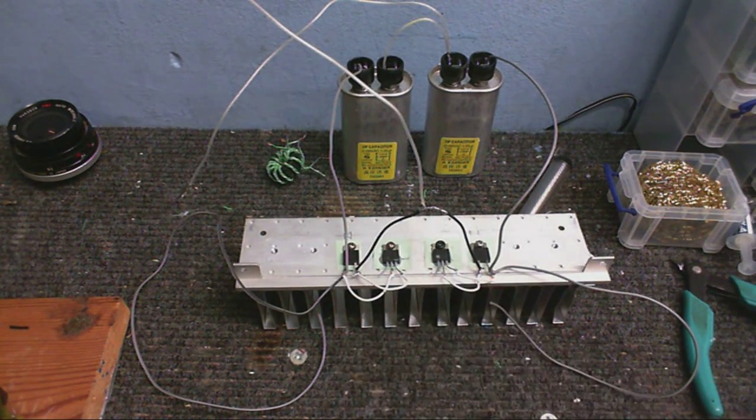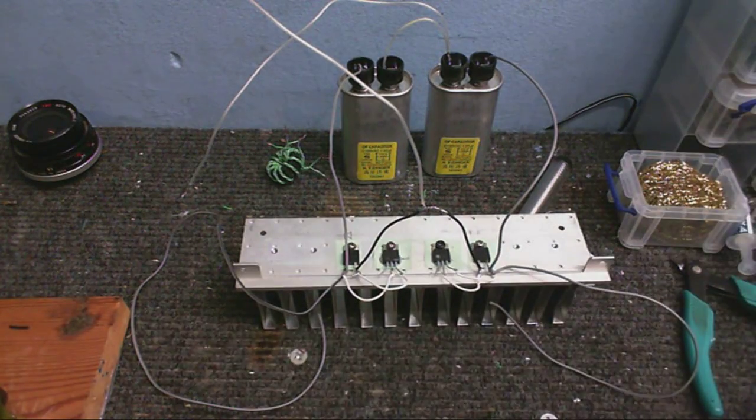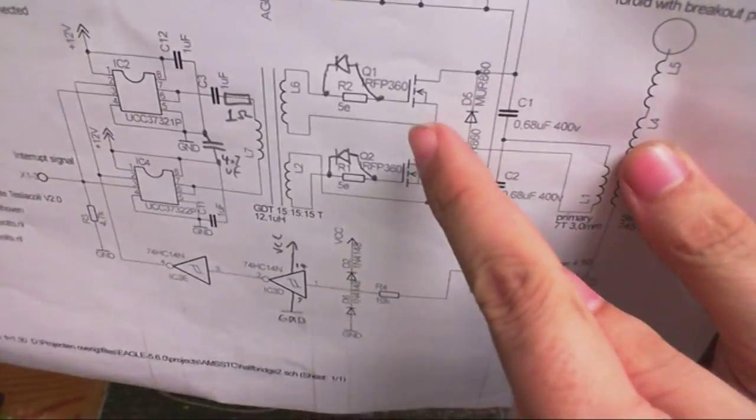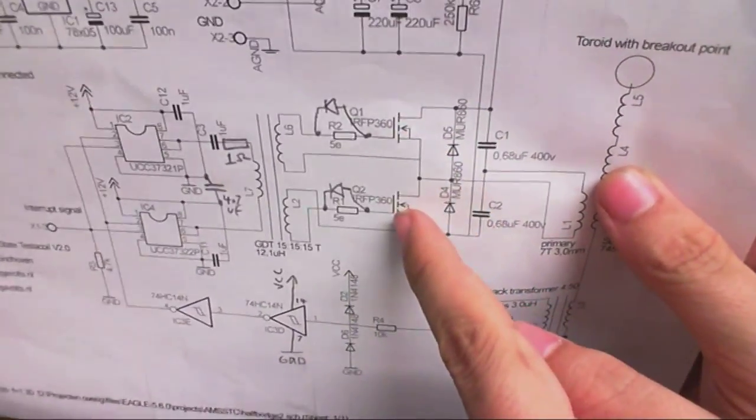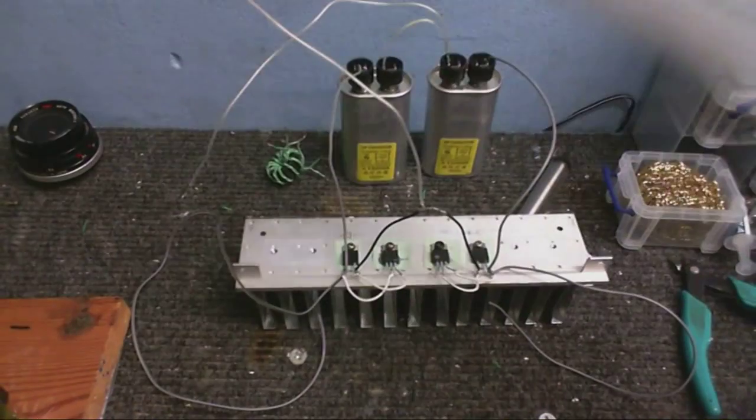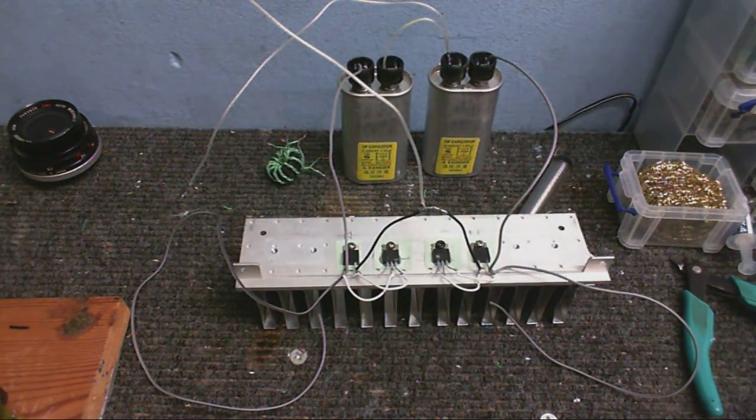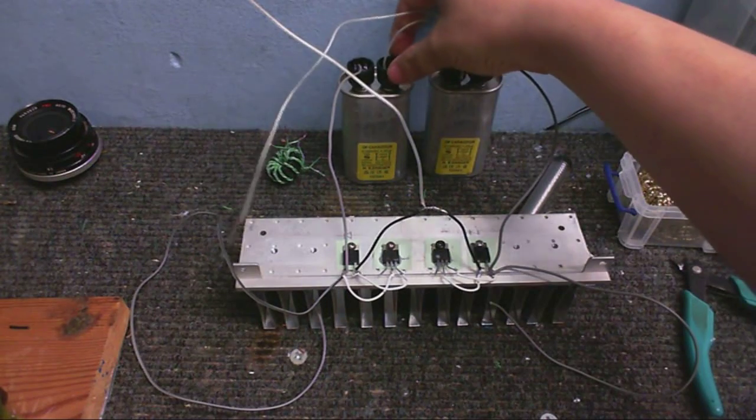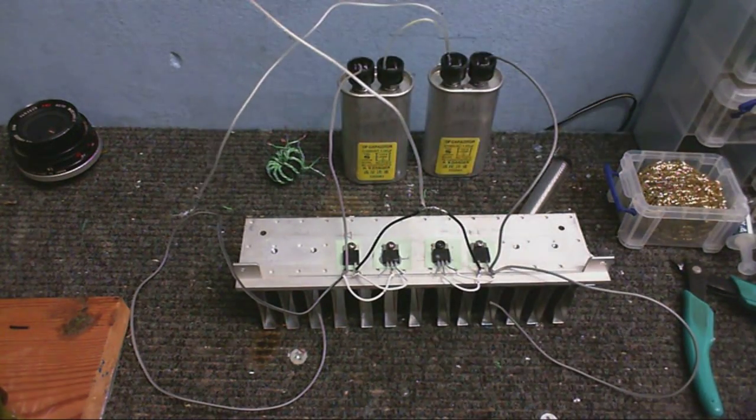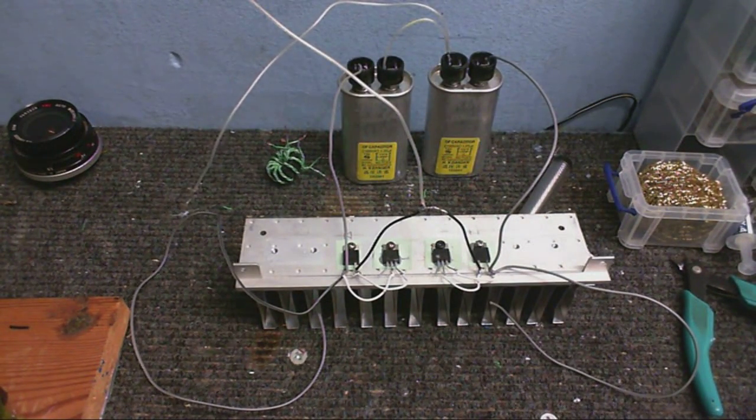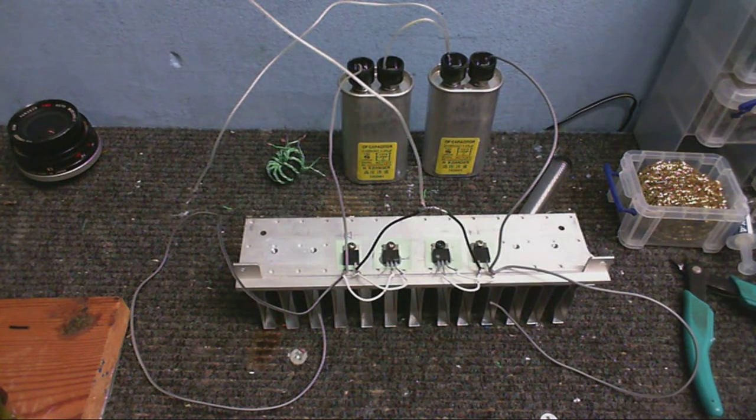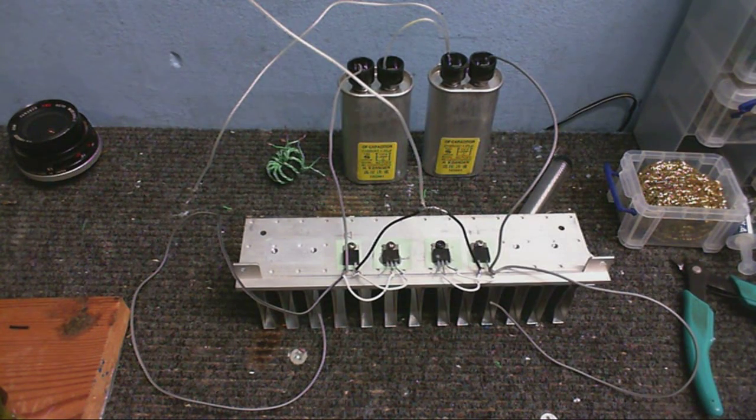Got the MOSFETs and the diodes, which is this part right here. There's the MOSFETs, there's the diodes, and for my capacitors I've used microwave oven capacitors. These are probably not the best kind of capacitors to use, but they are more than certainly going to be able to handle the voltage.